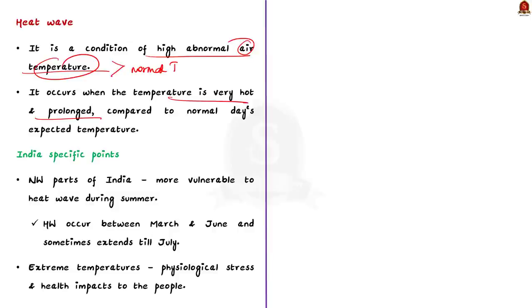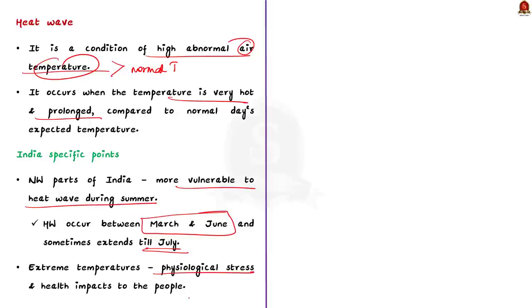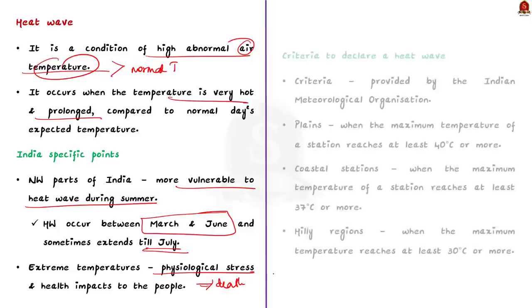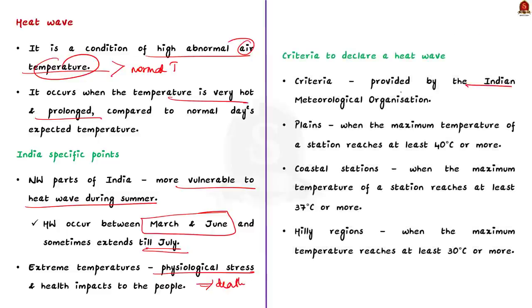Coming to India-specific information: during the summer season, the northwestern parts of India are more vulnerable to heat waves. Heat waves typically occur between March and June and in some rare cases extend till July. The extreme temperatures and resultant atmospheric conditions in the northwestern parts of India adversely affect the people, as heat waves cause physiological stress and health impacts. Sometimes it can even result in death. The Indian Meteorological Organization has provided some criteria to declare a heat wave.